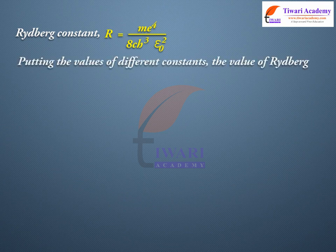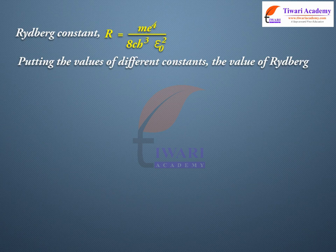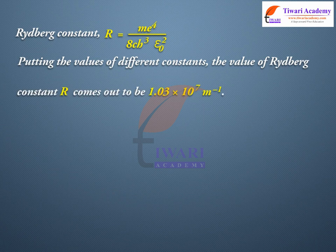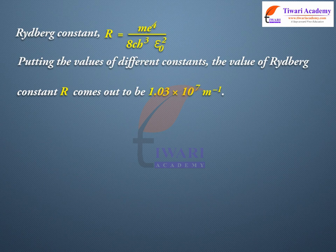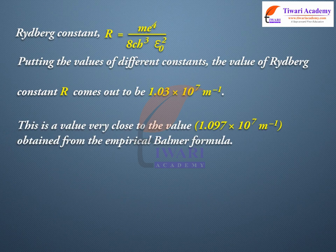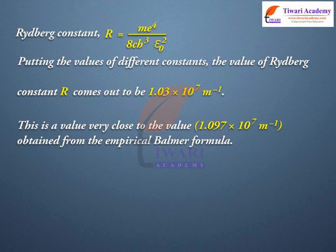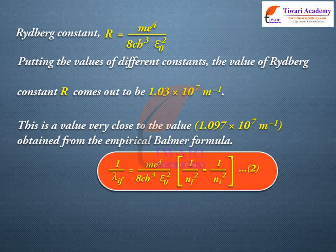Putting the values of different constants, the value of Rydberg constant R comes out to be 1.03 × 10^7 m^-1. This is very close to the value 1.097 × 10^7 m^-1 obtained from the empirical Balmer formula. Equation 2 is in strong agreement.